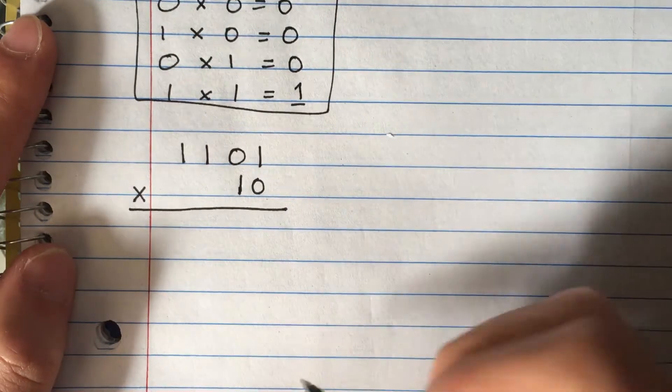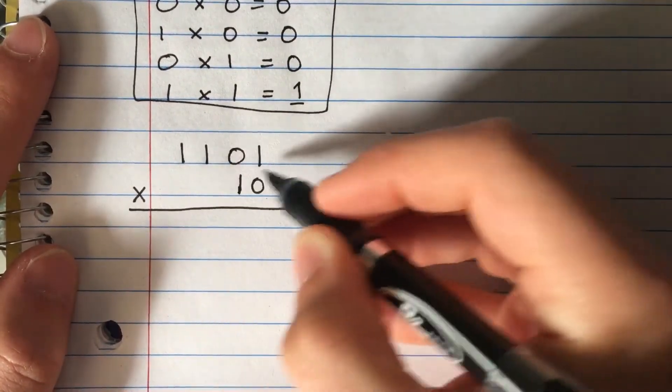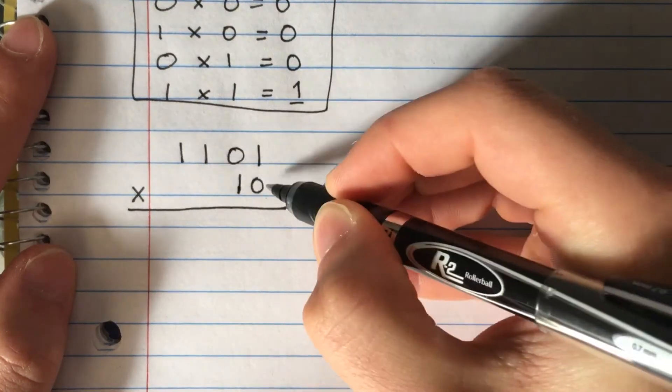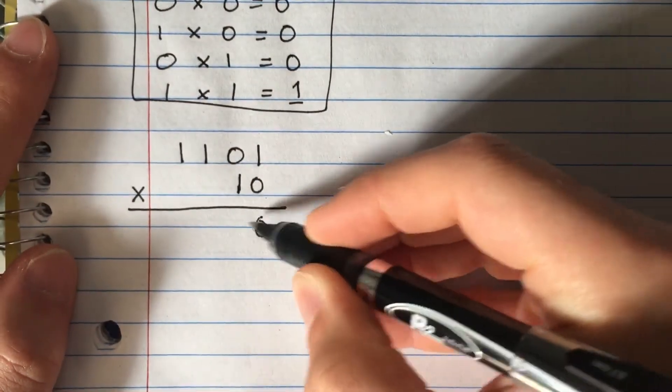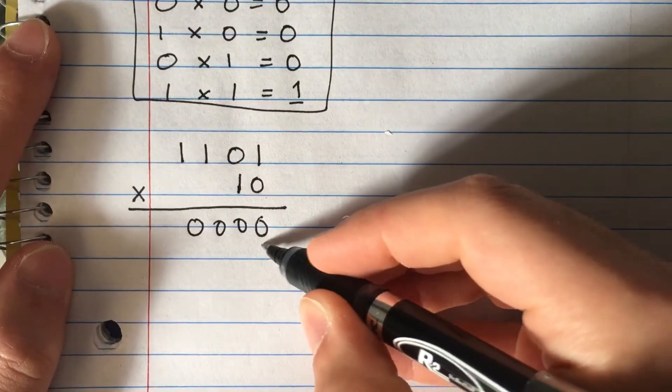If you have a zero here, you can just write four zeros because 1 times 0 equals 0, 0 times 0 equals 0, 1 times 0 equals 0, and 1 times 0 equals 0. So you have four zeros. Now we're going to place a zero here.